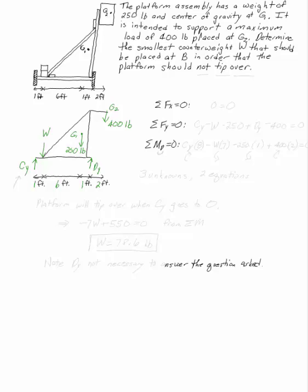For the sum of the forces in the X direction, I have 0 equals 0. Sum of the forces in Y, I've got CY minus W minus 250 plus DY minus 400 equals 0.